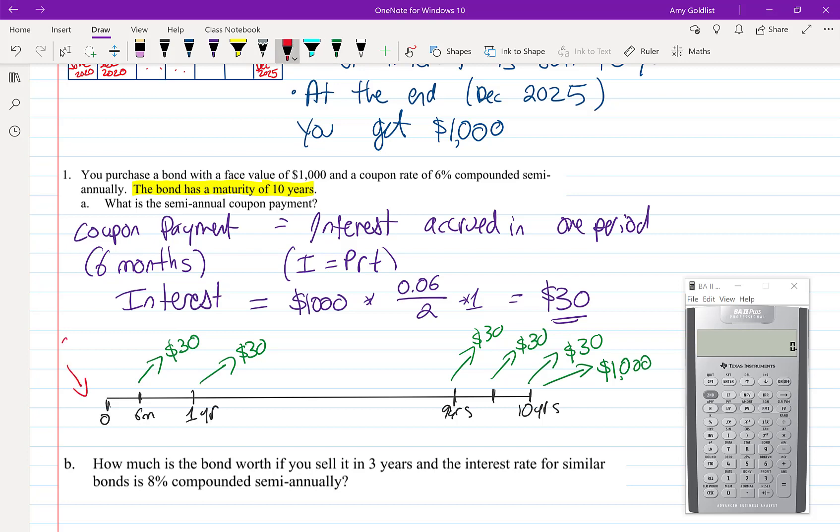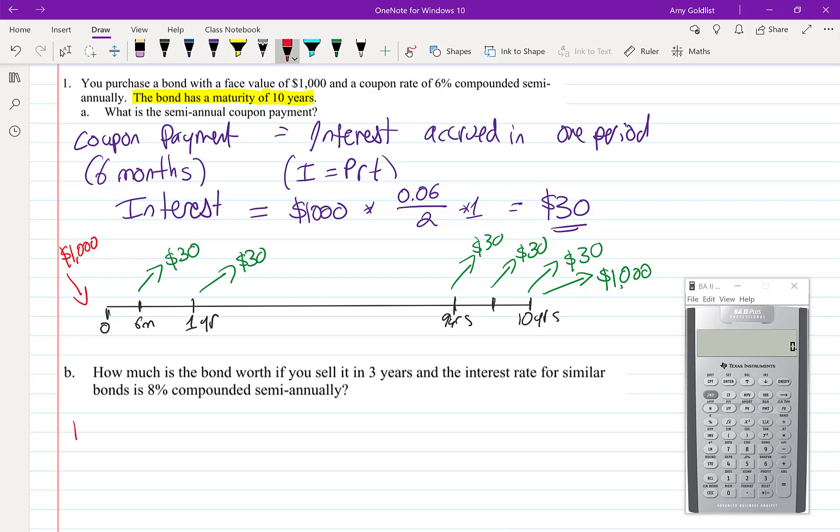The interesting thing comes when we don't keep it for the full ten years. Bonds are a financial instrument just like stocks, and we can sell them on the open market, on the bond market. In this case it's usually useful to calculate what we call fair market value—how much somebody else would pay for the bond.